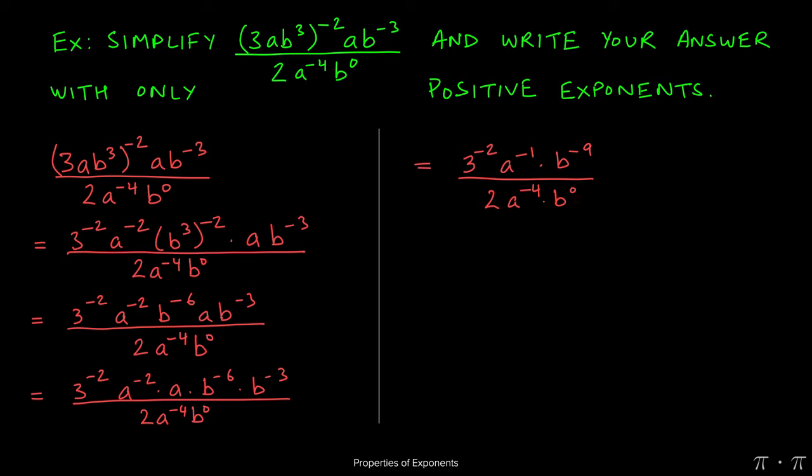At this stage, we can finally address the b to the 0 in the denominator and just replace it with 1. A variable raised to the 0th power is always 1. Everything else stayed the same going from here to here. I just simply replaced b to the 0 with 1.